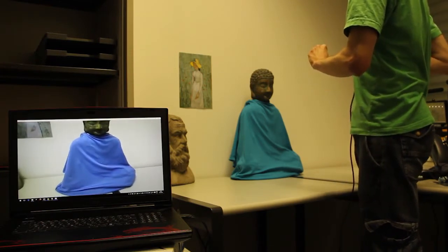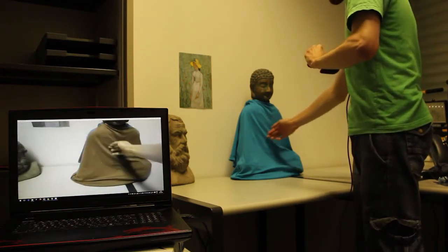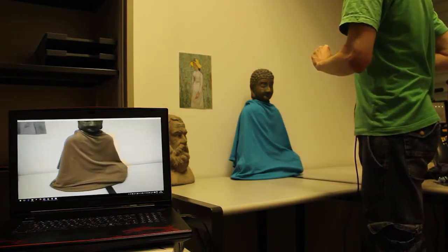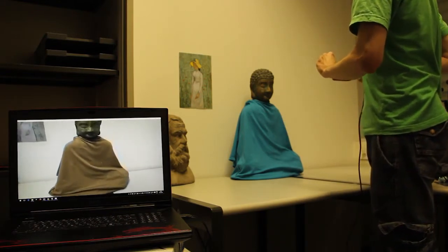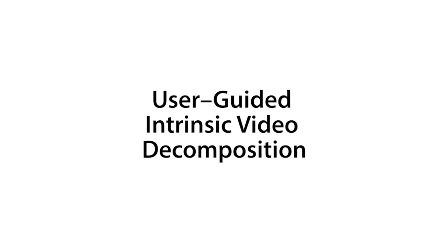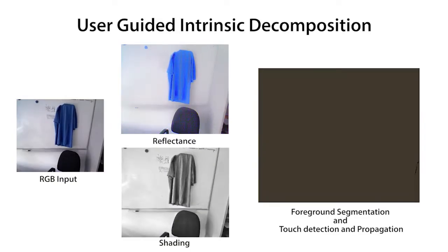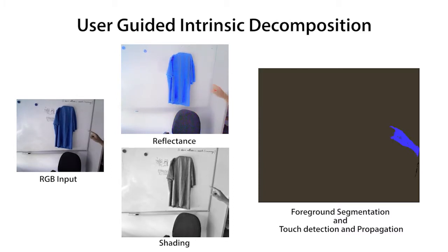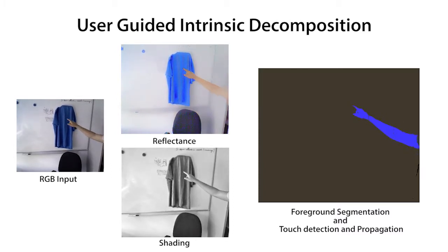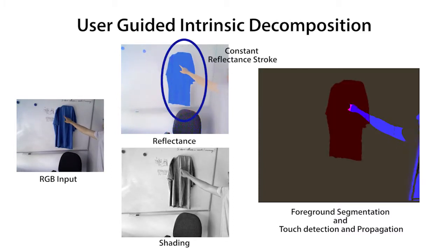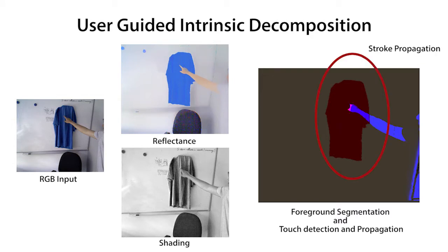Here, we recolor the statue's clothes realistically. User interaction is detected using a depth-based foreground segmentation along with skin tone detection. Here, we demonstrate a constant reflectance stroke, which is propagated over the entire shirt.